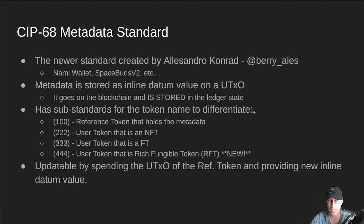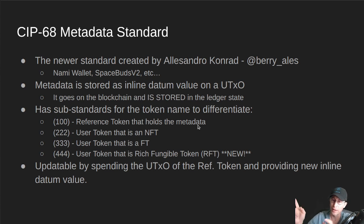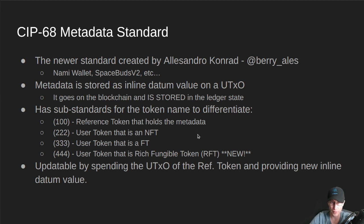CIP68 has a number of substandards to differentiate the different token types. There's what's called a reference token, which has the name prefixed with parenthesis 100. That's the one that holds the UTXO — it's like a marker token on the chain so you know where to find the metadata. If you have a token with the same policy and same name, one with 100 and another with say 222, your wallet can see the 222, look up where the reference token is, what UTXO it's sitting on, and then get all the metadata from that location on the ledger. The 222 standard is for NFTs, and the 333 standard is for fungible tokens — where you can specify decimals or whatever.